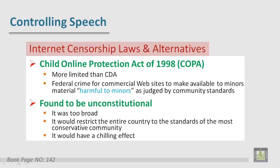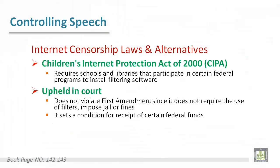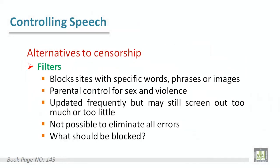In a subsequent act, more restrictions were made, so it became a crime for commercial websites to make available material harmful to minors as judged by community standards. In the Children's Internet Protection Act of 2000, more protection was added — this act requires schools and libraries that participate in certain federal programs to install filtering software.